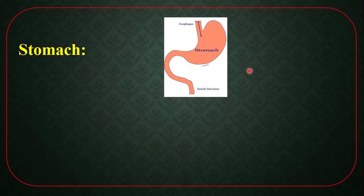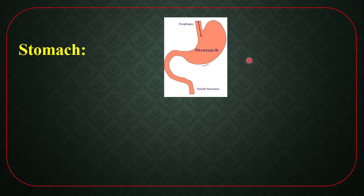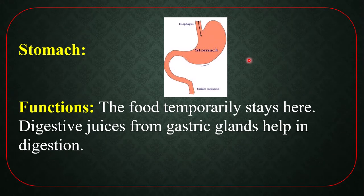Stomach — its wall is thick and muscular. The first and last part of the stomach contain muscular rims, meaning one ring at the entry and another at the exit — a total of two rims. On the stomach wall, a large number of gastric glands are found. This food temporarily stays here. Functions: the food temporarily stays here, and digestive juice from gastric glands helps in digestion.